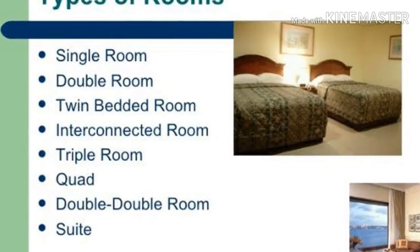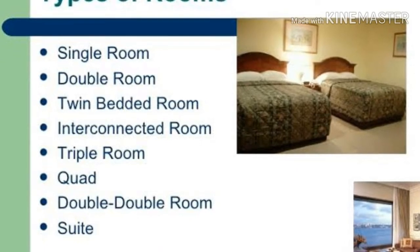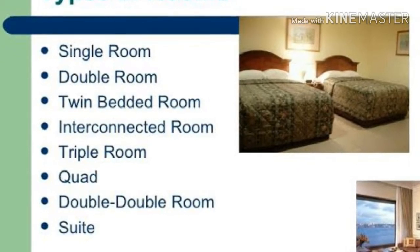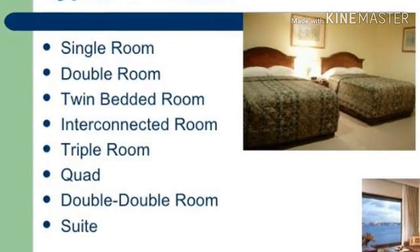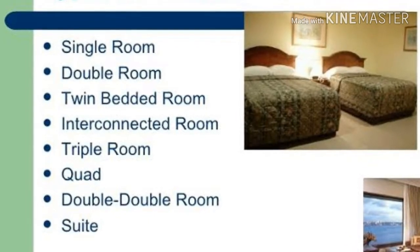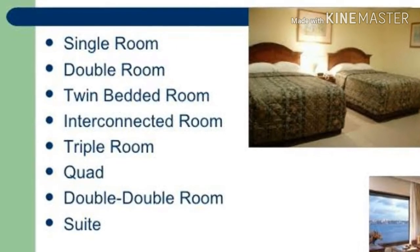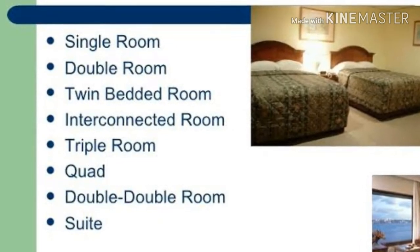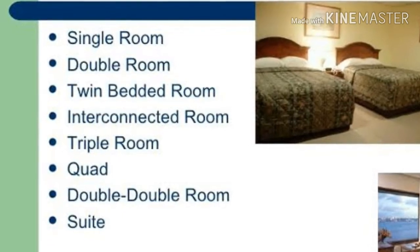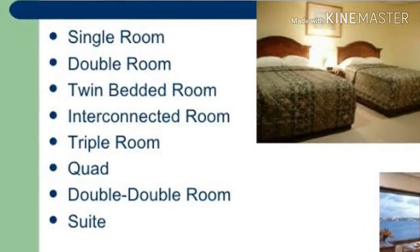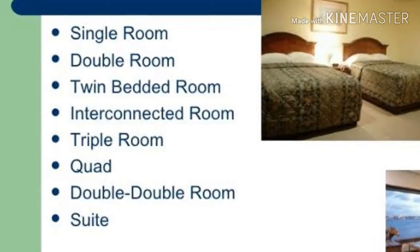Single rooms are accommodated for one person only. Double rooms are for double occupancy. Twin rooms are also occupied by two persons, but the beds are separated from each other. There are also interconnecting rooms, triple rooms, quad rooms, and studio rooms which will be described step by step.